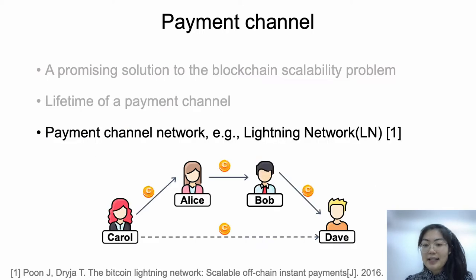Payment channels form a network. In the network, users who don't have direct channels could also perform multi-hop off-chain payments using a path of channels. In the figure, Carol could pay Dave using the path Carol, Alice, Bob, Dave. The Lightning Network, for example, is a practical payment channel network deployed upon Bitcoin.